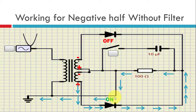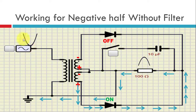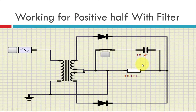Because of this, we get the current as seen by the blue arrow, and even in this case the current flows in the same direction. So whether the input cycle is positive or negative, the current flowing through the output resistor is in the same direction. So we get the same output. That was the working without the filter.